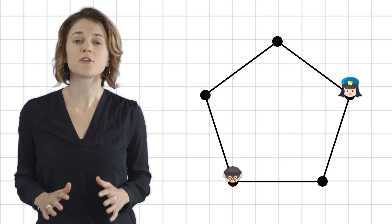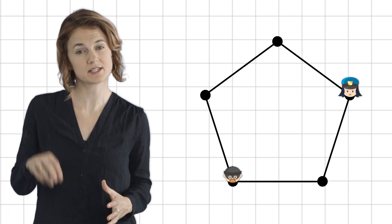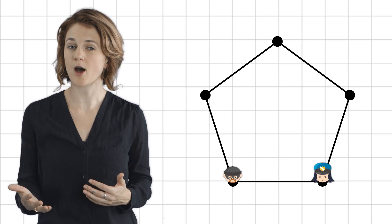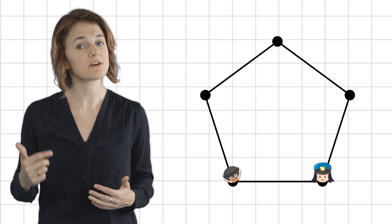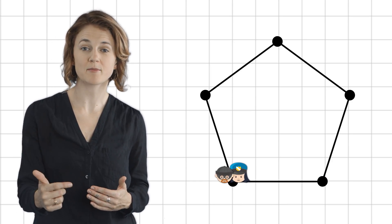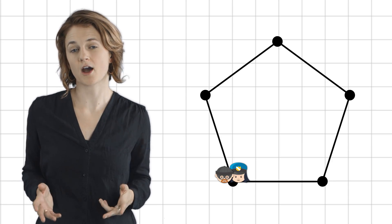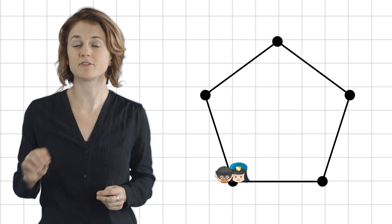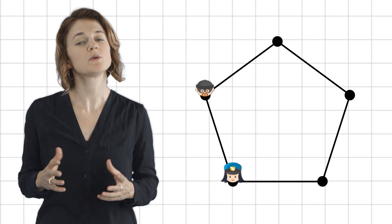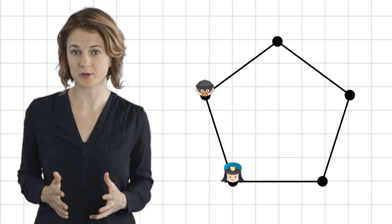On any given turn, the player can choose not to move, to stay where they are. We'll assume that the cop always goes first. If, eventually, the cop lands on the robber's vertex, the game is over. We say that the game is a win for the cop. But if the robber can avoid the cop indefinitely, we say that the game is a win for the robber.